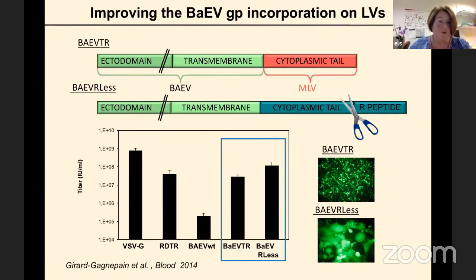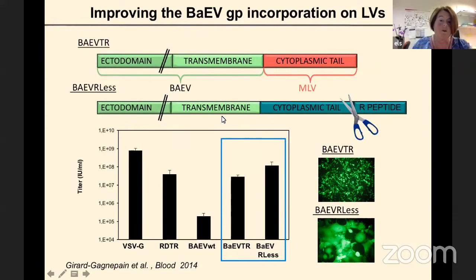One problem is that these wild-type glycoproteins do not efficiently pseudotype lentiviral vectors — this may be due to a lack of compatibility between the envelope glycoprotein cytoplasmic tail and the core structure of the lentiviral vector. For this reason, we need to adapt these glycoproteins. One approach is to exchange the cytoplasmic tail of the baboon envelope for that of the murine leukemia virus envelope, or simply truncate part of the cytoplasmic tail. By these means, we augment the titer of the pseudotyped lentiviral vector by two logs or more.